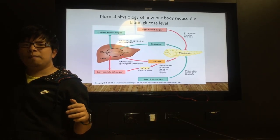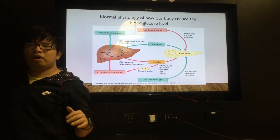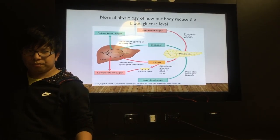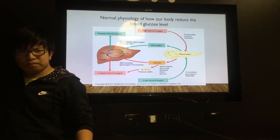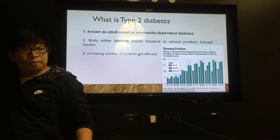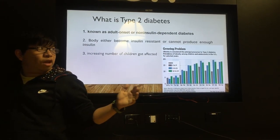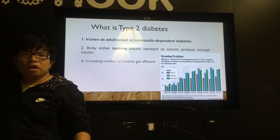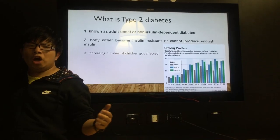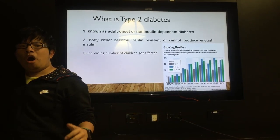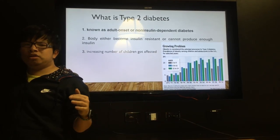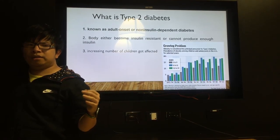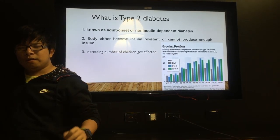But in type 2 diabetes, the body either becomes insulin resistant or cannot produce enough insulin, which makes less glucose converted into ATP and makes the blood glucose maintain at a very high level.